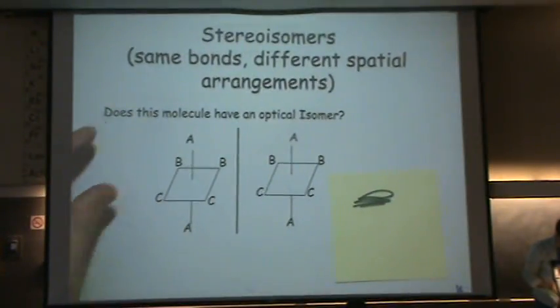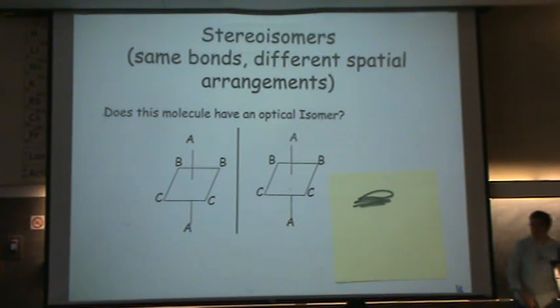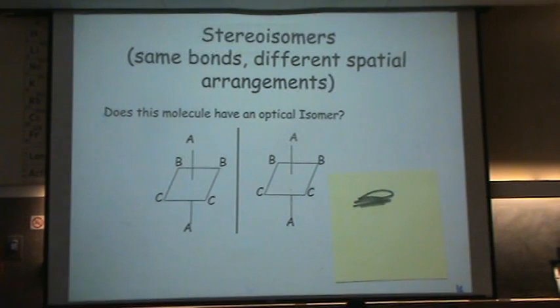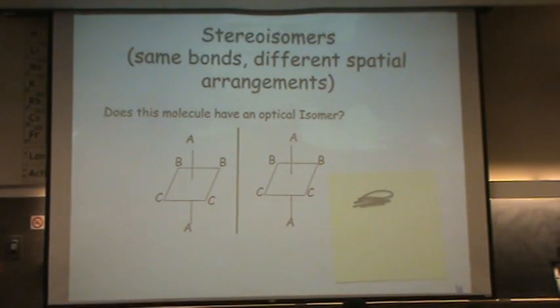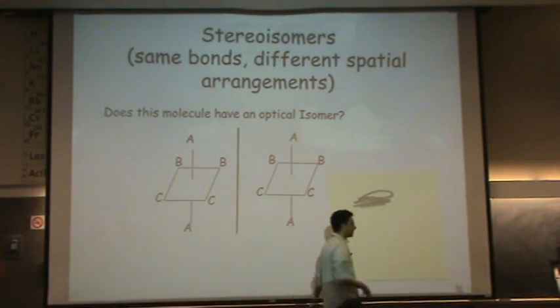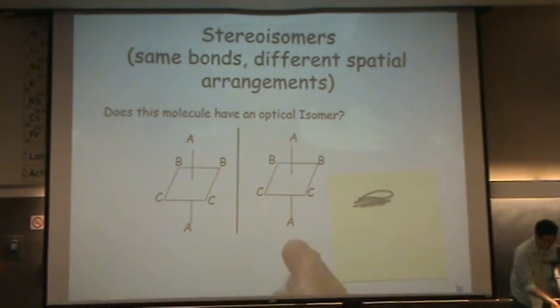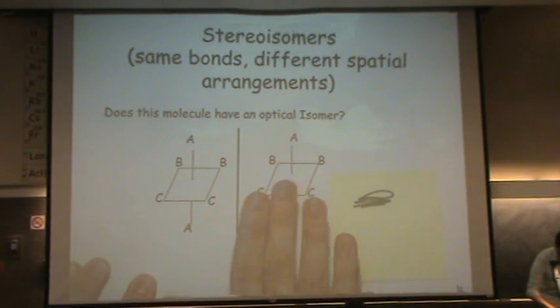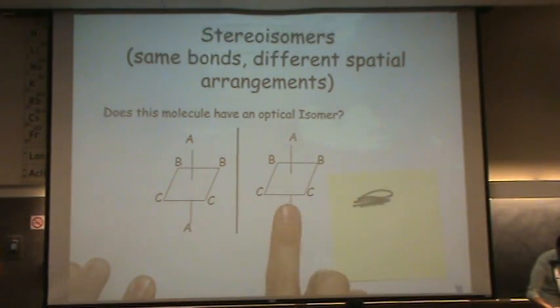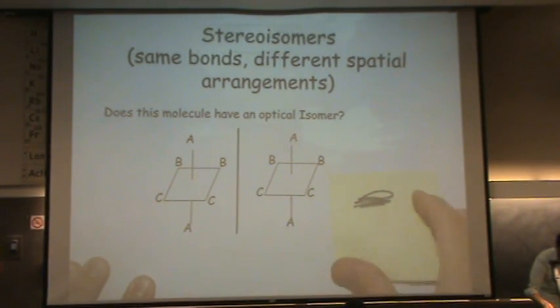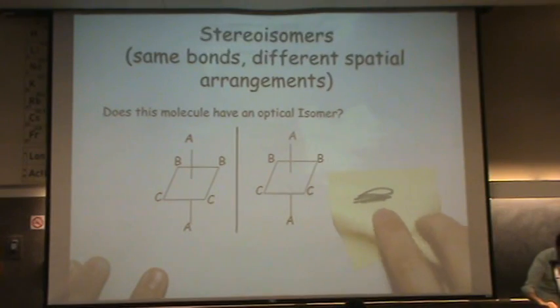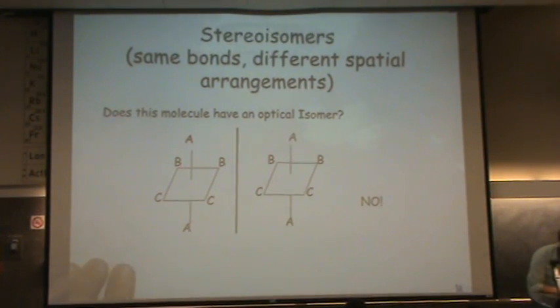Anybody have a guess of what we would call them? They are identical — they are the same. They're not optical isomers, not chiral. If you spin them around, in this case you can just move this over the way this one's drawn — just move it over to the right — you'll see they're totally identical. So there are no optical isomers.